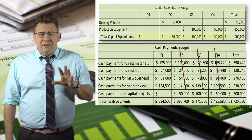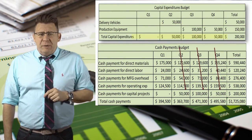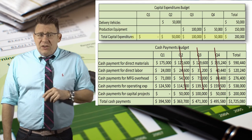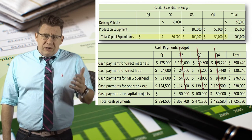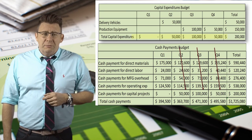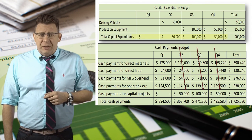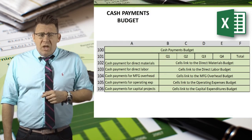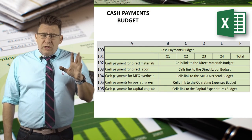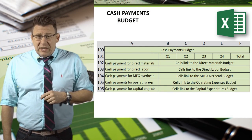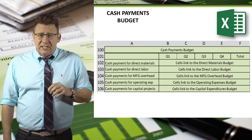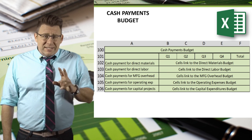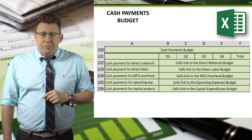Finally, the timing of capital expenditures are listed in the quarter they incur. This information comes directly from the capital expenditure budget. Of course, we would look to build this budget in Excel and link the values with the related data from the appropriate budgets.